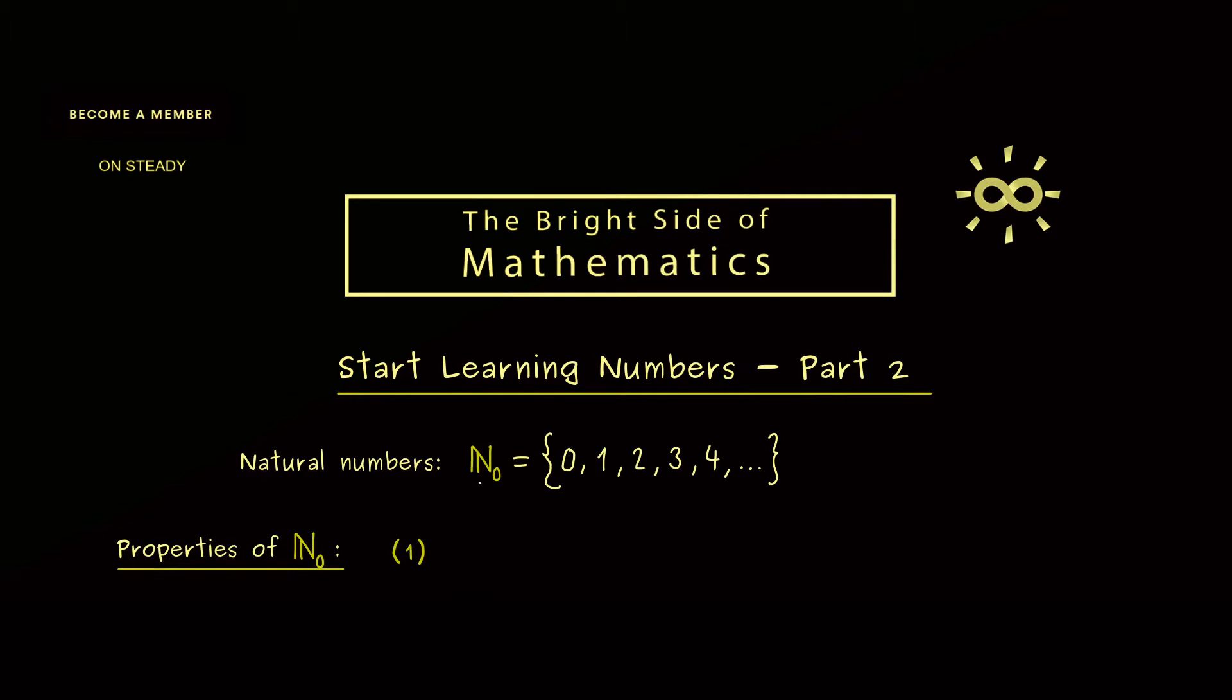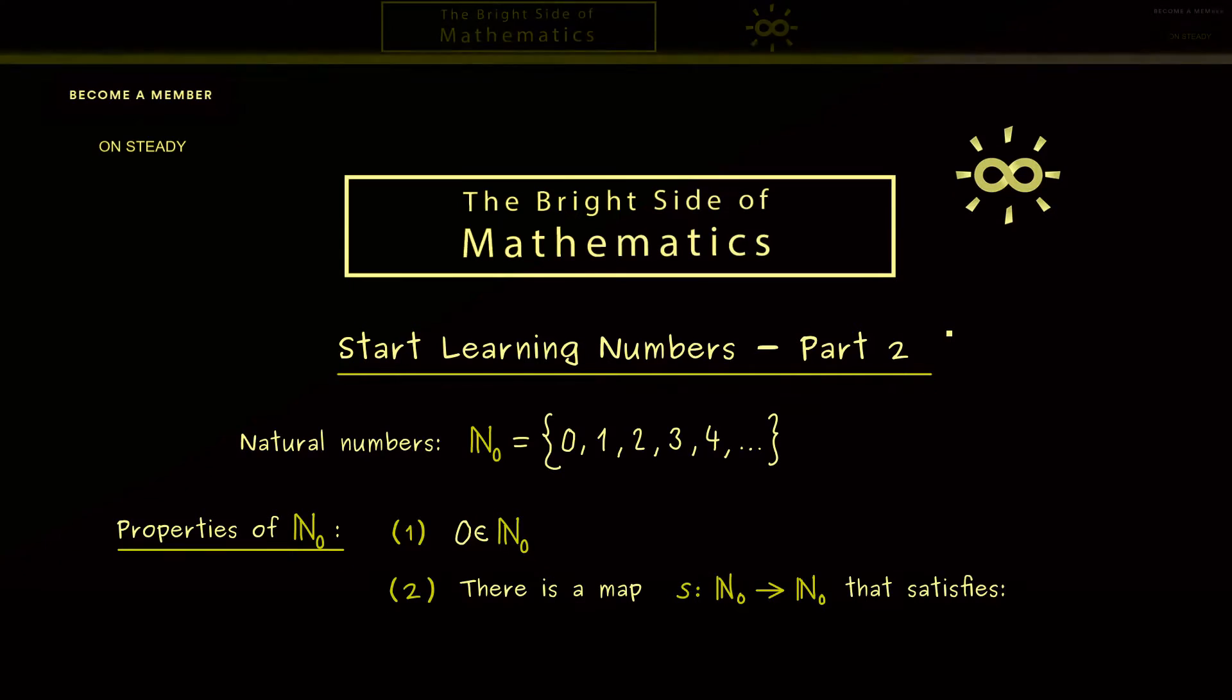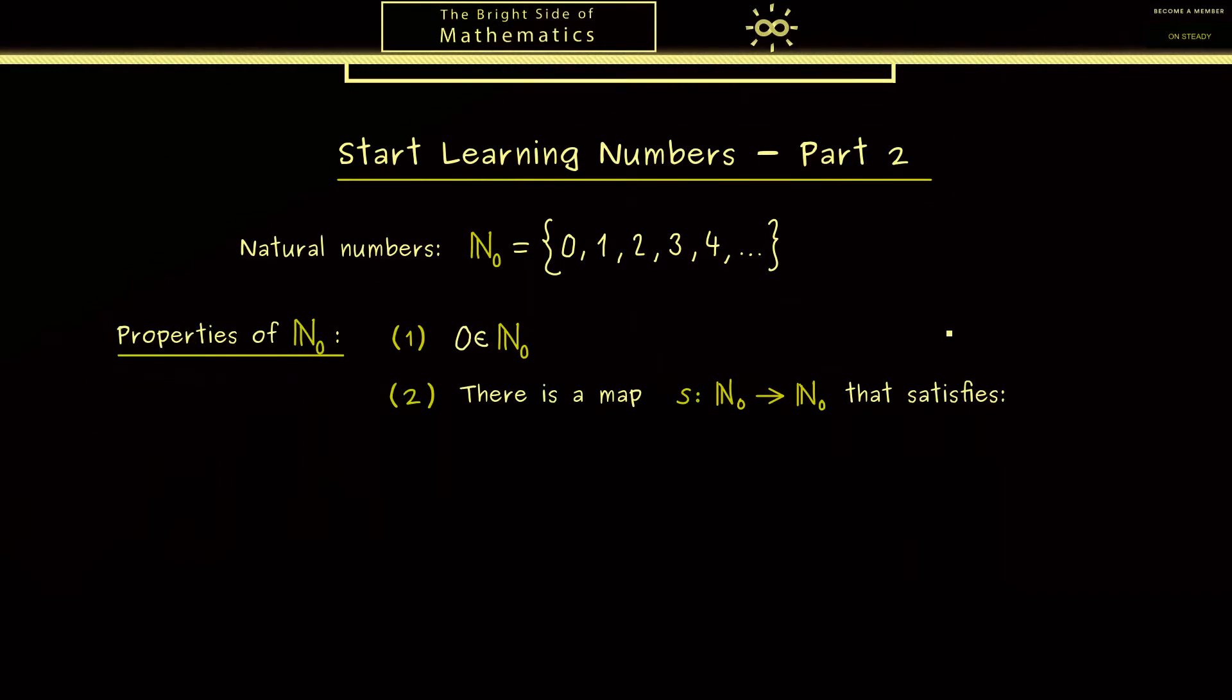The first one is simply that N₀ is not empty and it contains a special element we call 0. And the second property tells us there is a map s from N₀ into N₀. And this map we simply call the successor map. It bears this name because it satisfies the following 3 special properties.